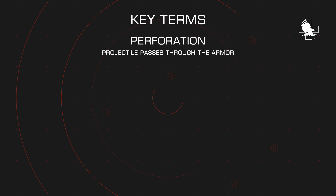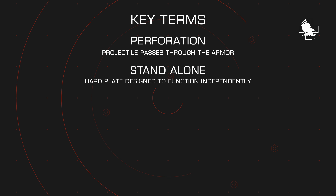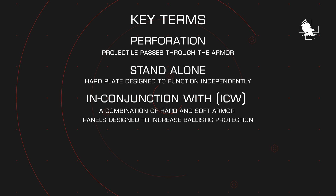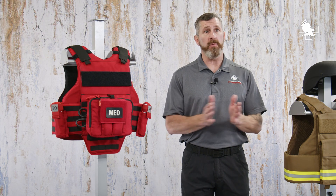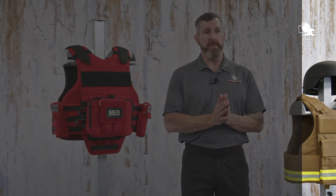Perforation is when a projectile passes through the armor. Standalone, in reference to rifle plates, is a hard armor plate designed to function independently of soft armor. In conjunction with is a combination of hard and soft armor panels designed to increase ballistic protection. With in-conjunction armor, it's important to remember that the hard armor and the soft armor panels used in the testing through the NIJ must be together in order to achieve that level of performance.